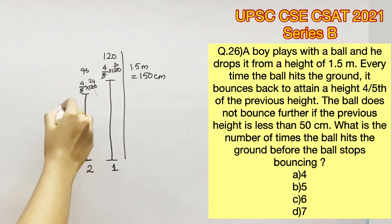So after attaining 96 centimeters, it hits the ground again. The ball will reach a height of 4/5 of 96, which will give us 76.8 centimeters.